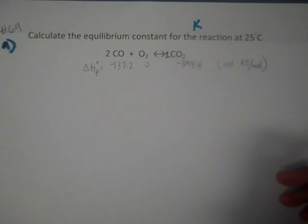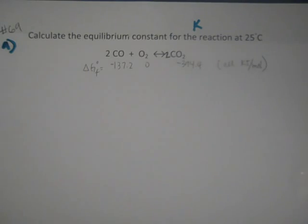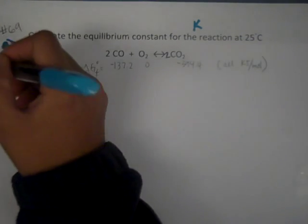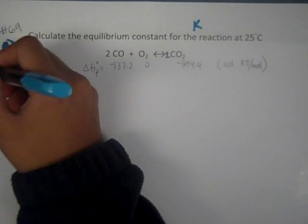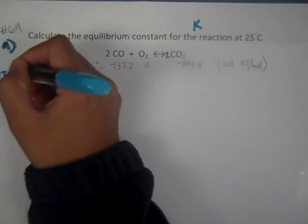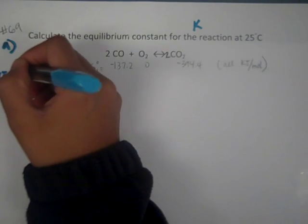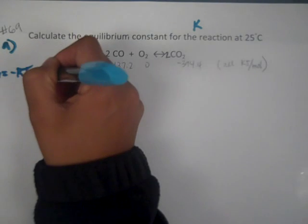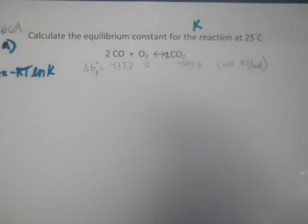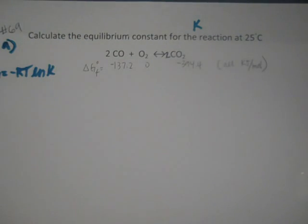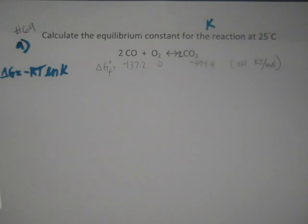We have to find K. Our formula for K is going to use delta G with negative RT natural log of K — that's the only way we can combine G and K. So we're going to need to find delta G first to solve for K.